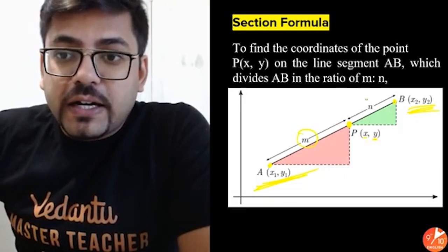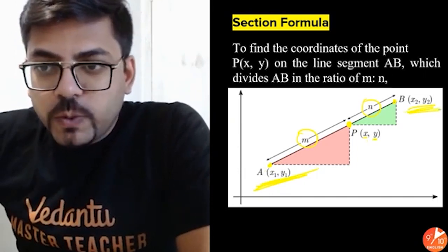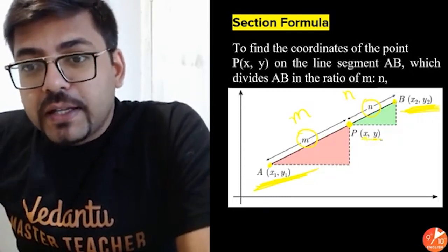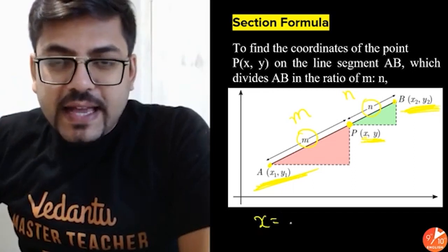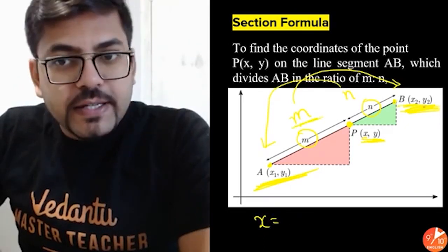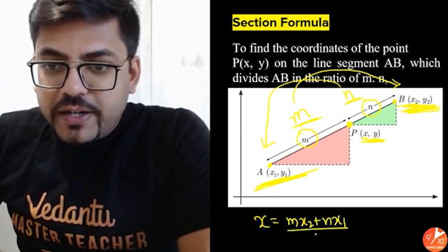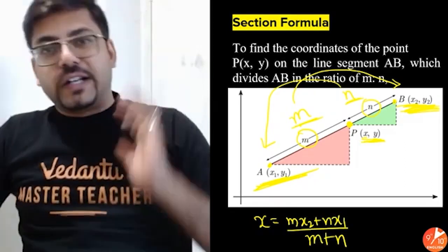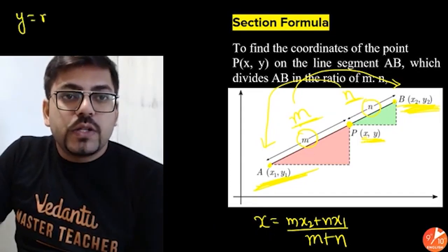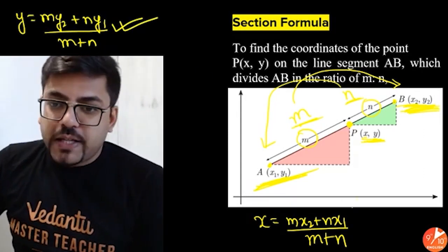We can write this X, Y in terms of the given coordinates X1, Y1 and X2, Y2, if the ratio is given that it is being divided in the ratio M is to N. So if you have a line AB having coordinates X1, Y1 and X2, Y2, and this line AB is being divided by a point P in the ratio M is to N, then the coordinates of P can be found using a formula: X equals M·X2 plus N·X1 divided by M plus N. This side ratio gets multiplied to this side's coordinates. That is what it is going to be. This is for X, and the same would be done for Y: Y equals M·Y2 plus N·Y1 divided by M plus N.